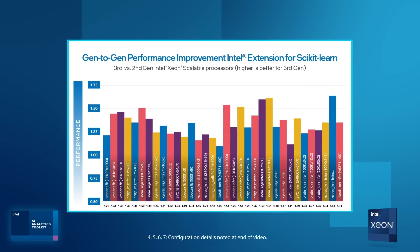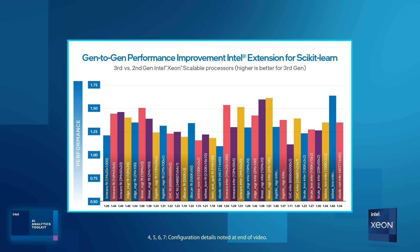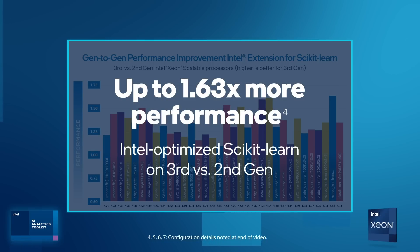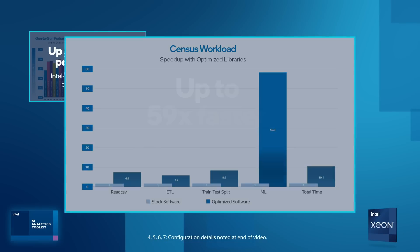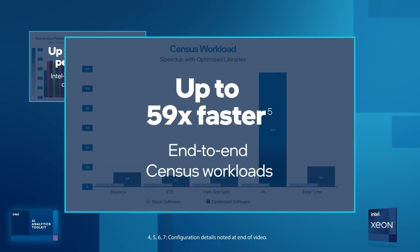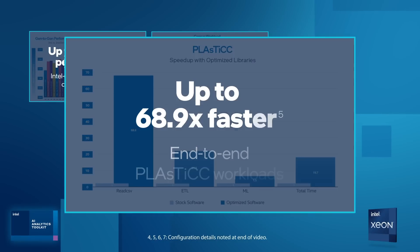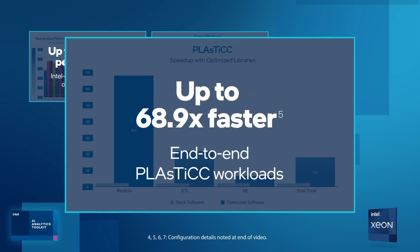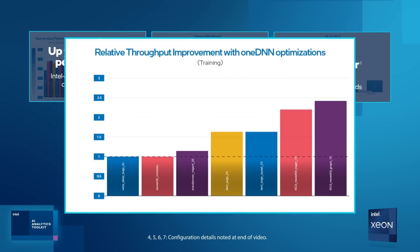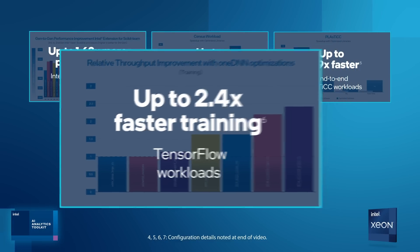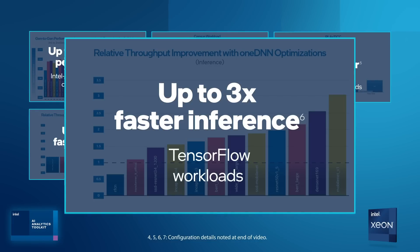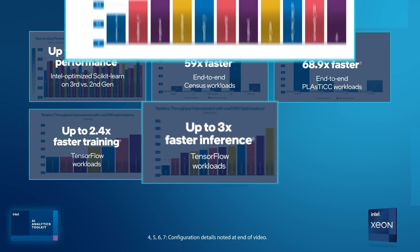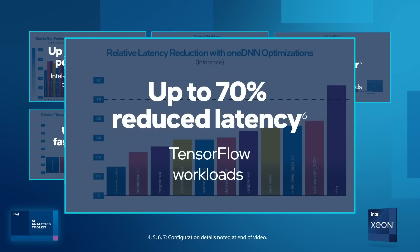With third-gen Intel Xeon Scalable Processors and Intel versions of TensorFlow, scikit-learn, and Modin, you can achieve dramatic performance improvements: up to 1.63 times more performance using Intel-optimized scikit-learn, up to 59 times faster end-to-end census workloads, up to 68.9 times faster end-to-end plastic workloads, up to 2.4 times faster training, up to 3 times faster inference, and up to 70% reduced latency for TensorFlow.